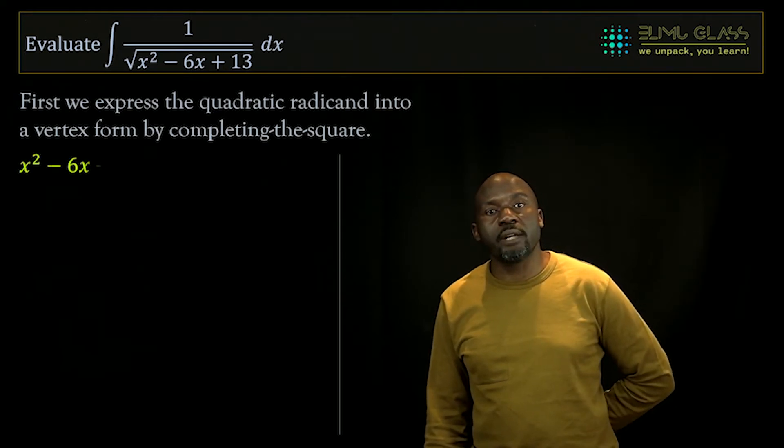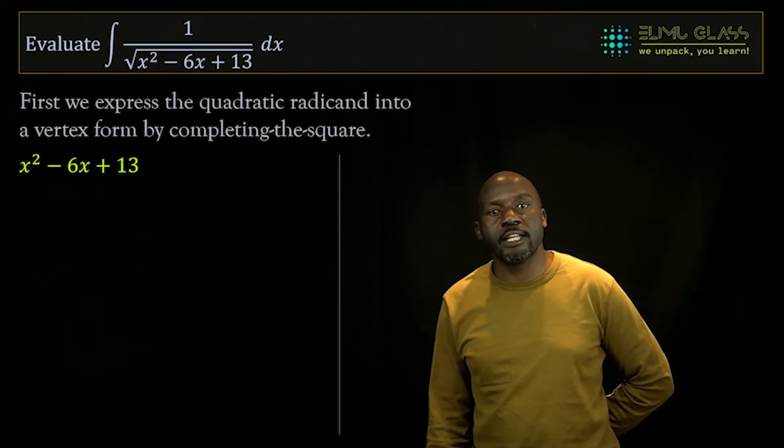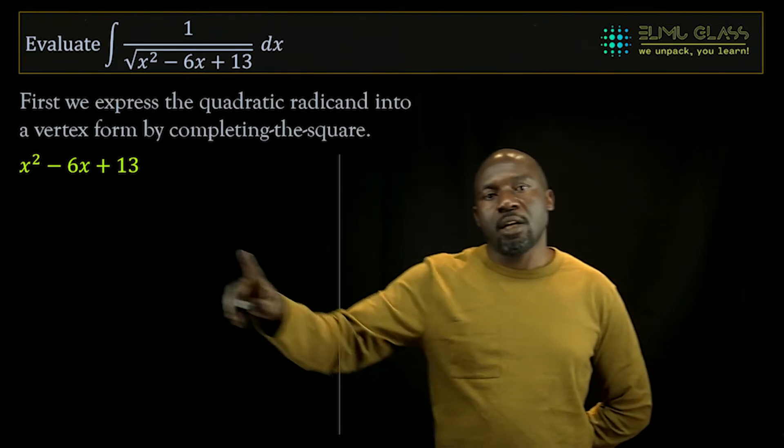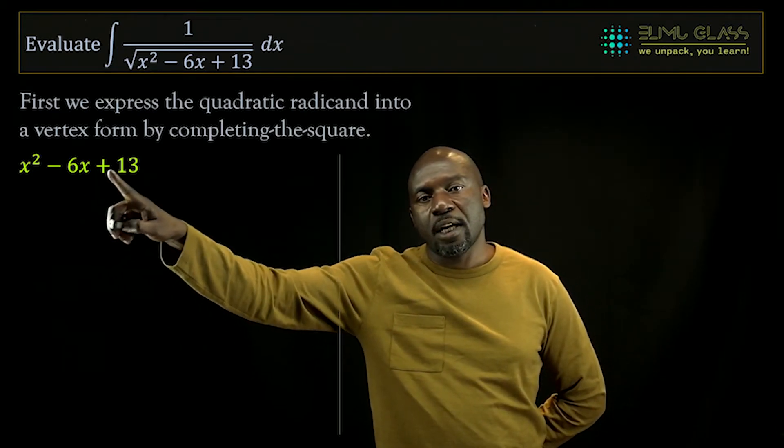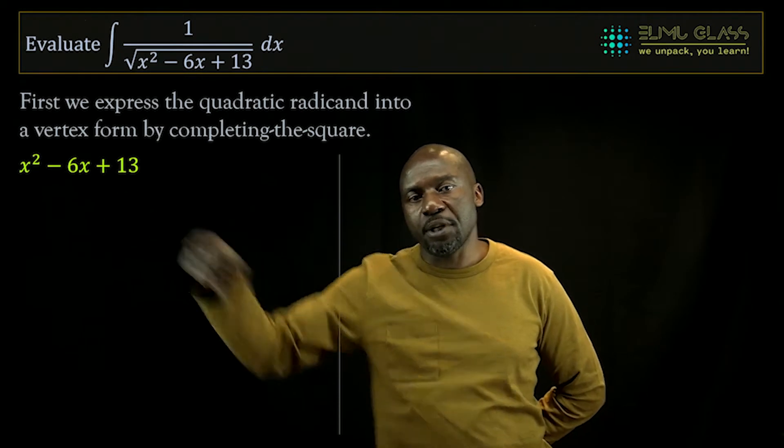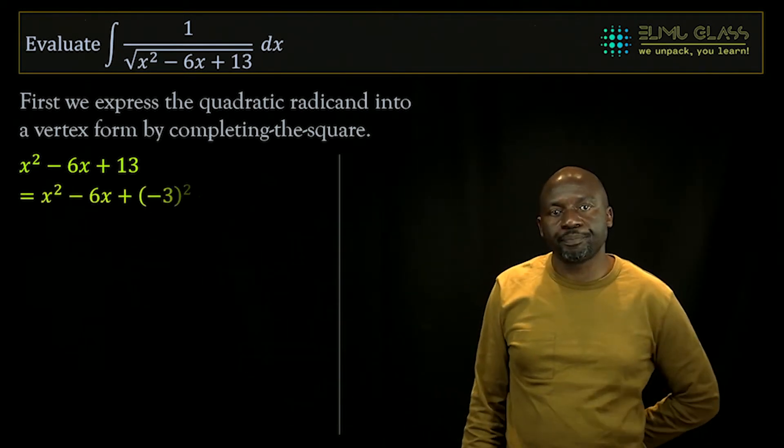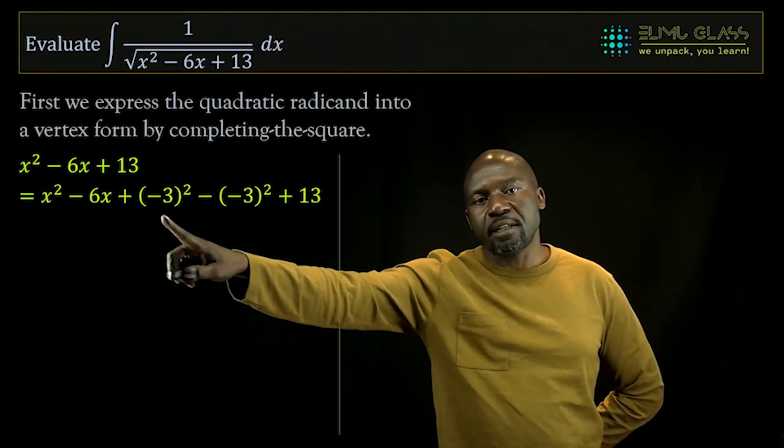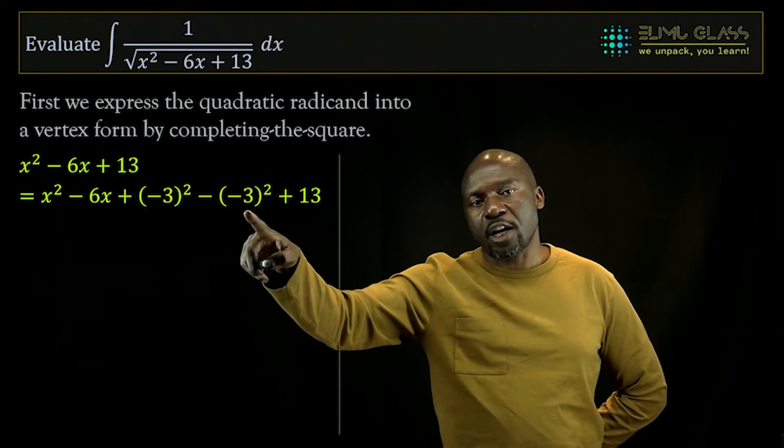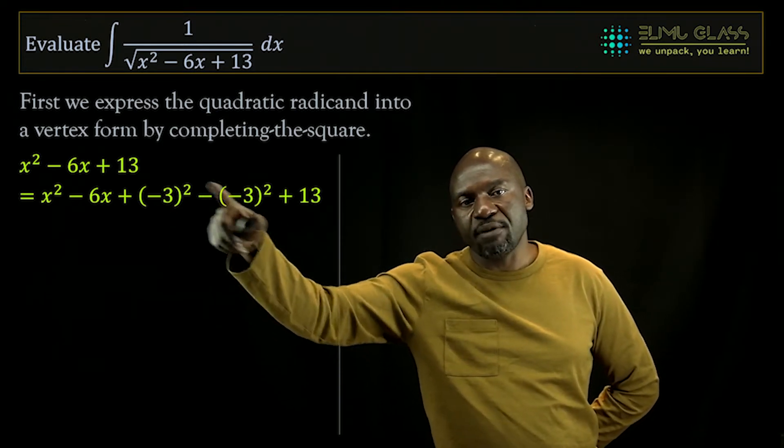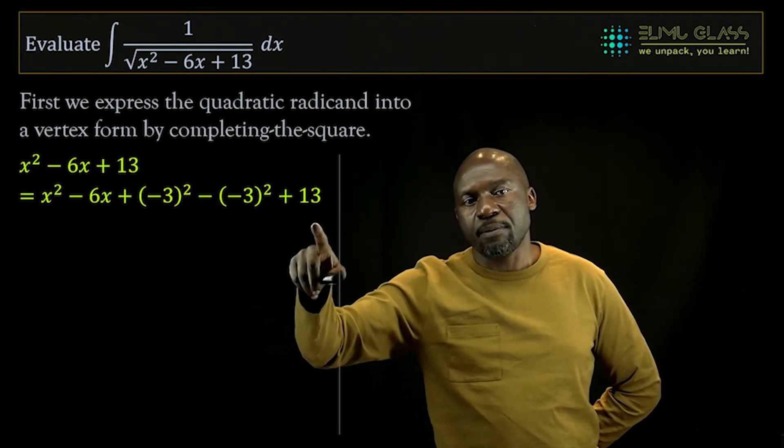So x squared minus 6x plus 13. If we're going to change this, what we need to do is add and subtract negative 3 squared there. So we'll add negative 3 squared and then subtract it, but by doing this we haven't changed that expression, and then plus 13.